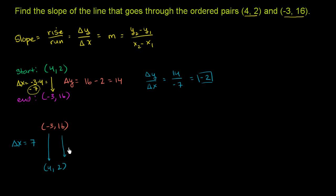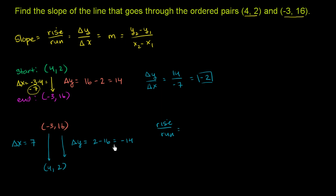And what is our change in y? If we start at 16 and end at 2, we went down 14, or 2 minus 16 equals negative 14. So rise over run — change in y over change in x — is negative 14 over 7. These are just the negatives of the previous values, and once again this equals negative 2.